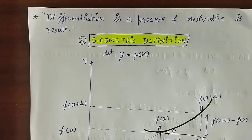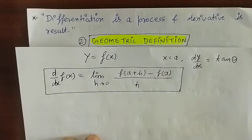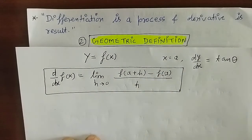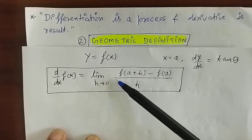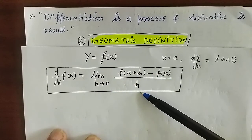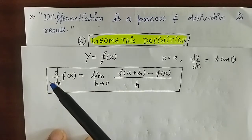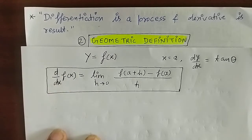अब हम geometric definition of differentiation discuss करते हैं। आपने कई books में differentiation की एक definition पढ़ी होगी जिसे हम first principle rule of differentiation कहते हैं: limit h tends to 0, f of a plus h minus f of a upon h। इसी को हम d upon dx of f of x के form में भी represent कर सकते हैं।